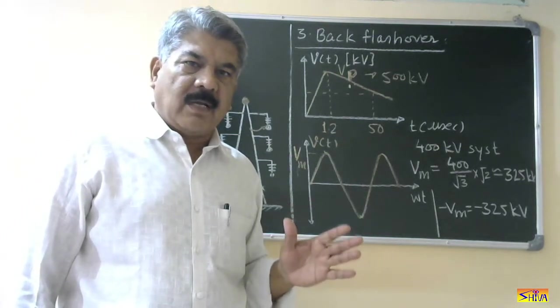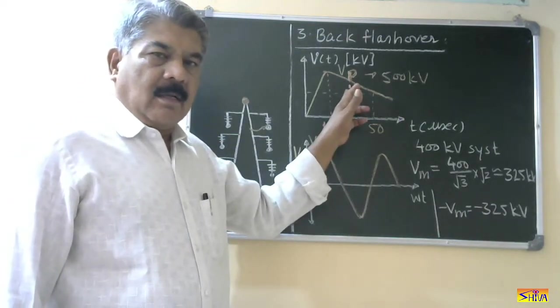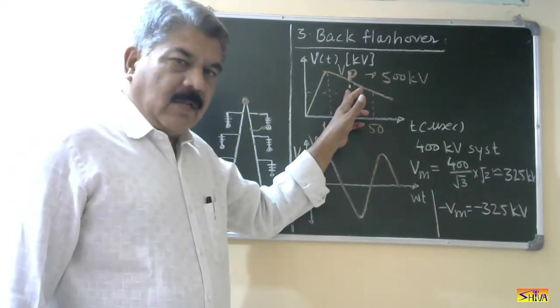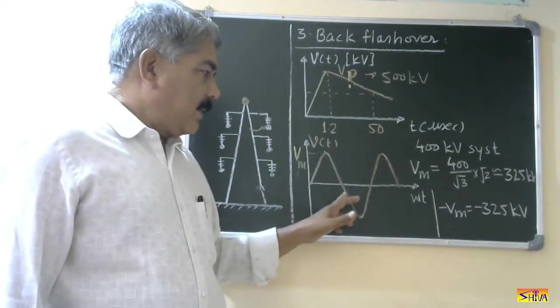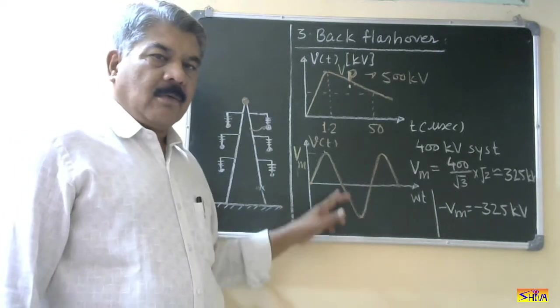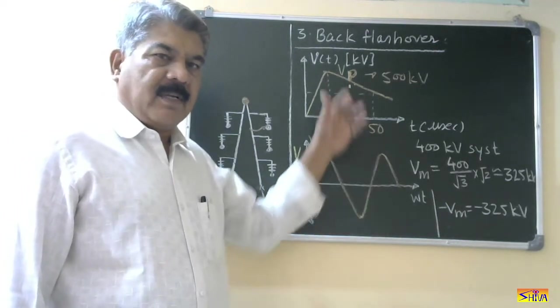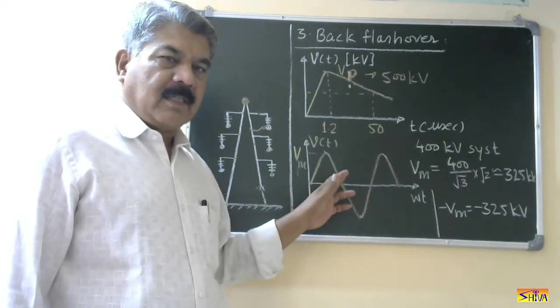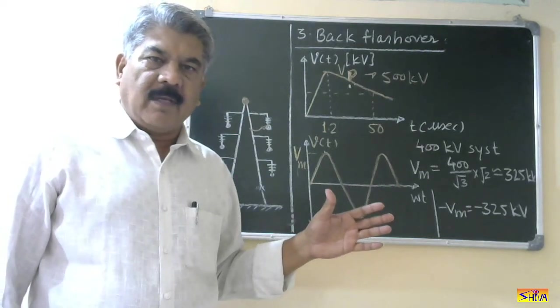Backflashover occurs means probability is more when lightning overvoltage is positive in polarity and this waveform is passing through negative cycle and vice versa. If it is negative then probability will be more when it is passing through positive cycle. That's how the backflashover occurs.